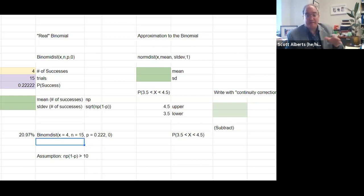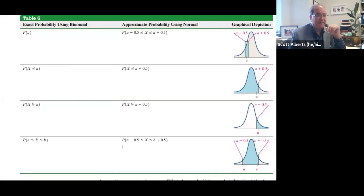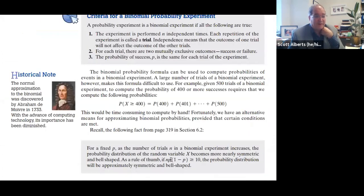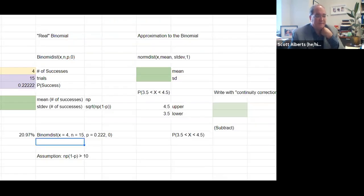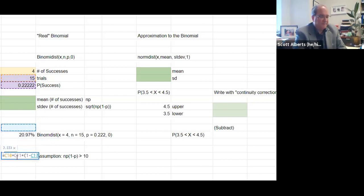The first thing we remember was this idea that for the approximation to be reasonable, we want to have NP(1-P) be greater than or equal to 10. If it's not, it'll still work, but it might not be as good of an approximation. So we calculate NP(1-P): N times P times one minus P. The number is 2.6, and you probably noticed that 2.6 is not greater than 10. So I live on the edge, let's go ahead and do this problem anyway.